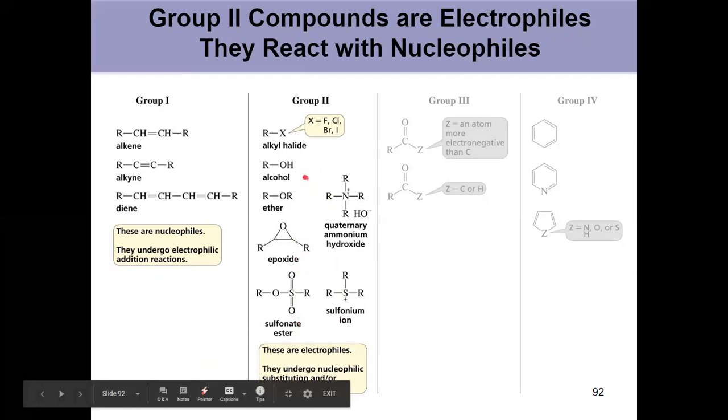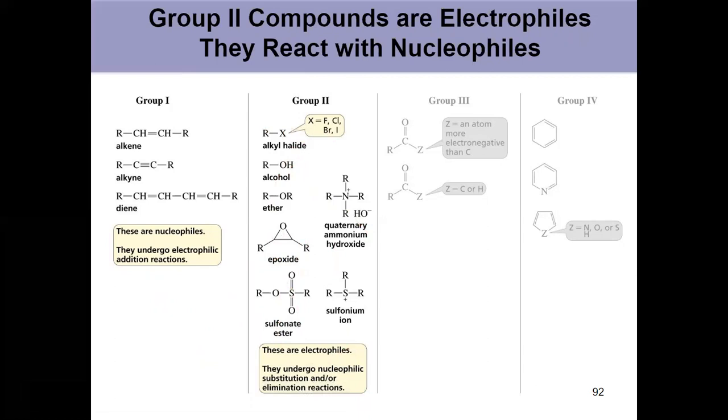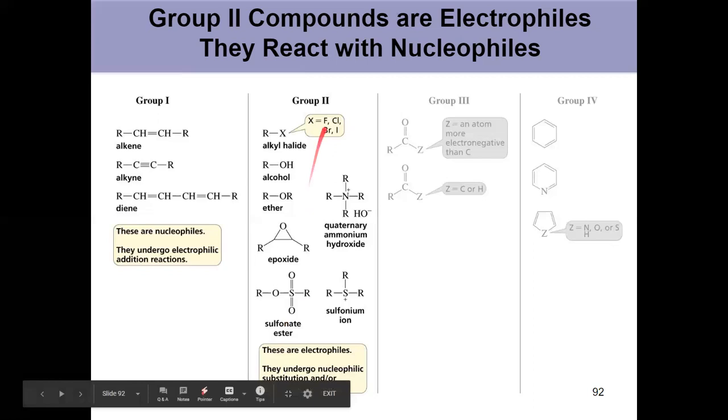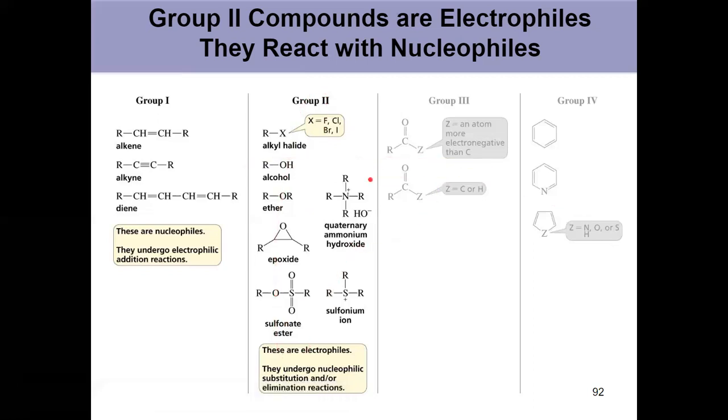Between chapter nine and chapter 10, chapter nine is all about alkyl halides. Chapter 10 was everything else here. It's largely all the same stuff. We've got a partial positive charge on our sp3 hybridized carbon because it's attached to some sort of electron withdrawing group. So that's the question. Does it react with a nucleophile in a substitution reaction? Or does it pull off a hydrogen and do an elimination reaction? That's what group two is all about.